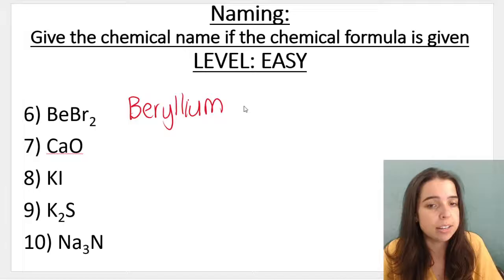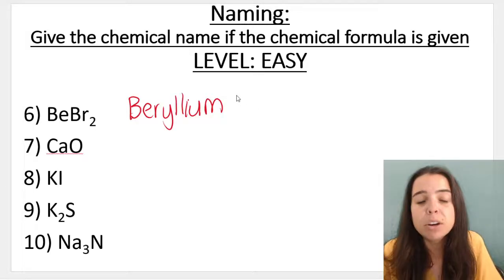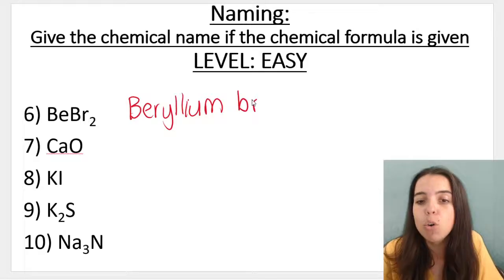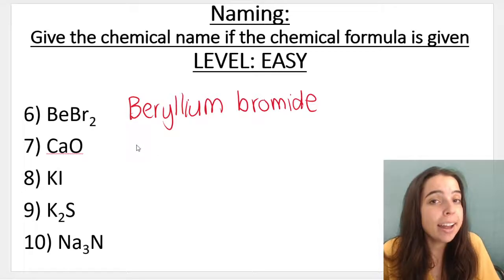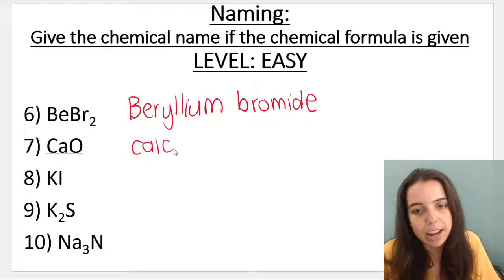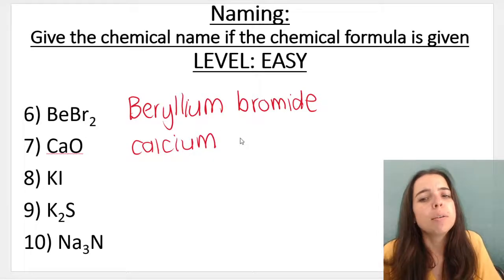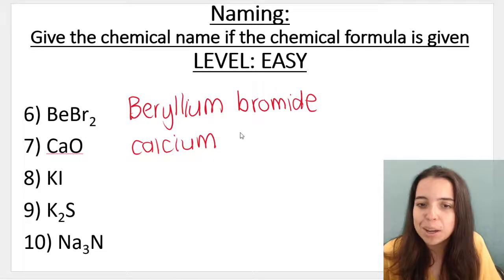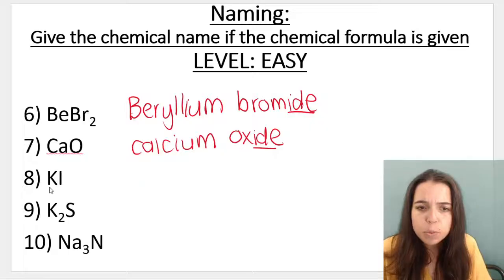Beryllium - the cation's name stays the same. Br is bromine, but when it bonds, when it forms an ion, it becomes the bromide ion. Easy peasy. Number seven: the cation is calcium. Ca is calcium, O is oxygen, but when it forms an anion it becomes the oxide ion. Remember, the anion's name changes and ends in -ide.